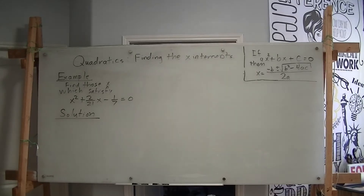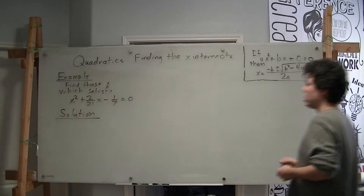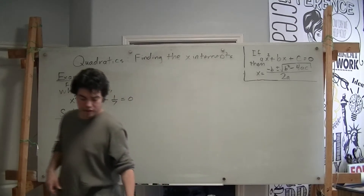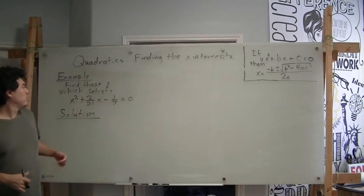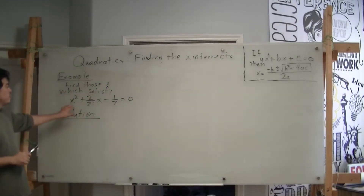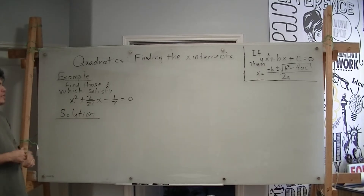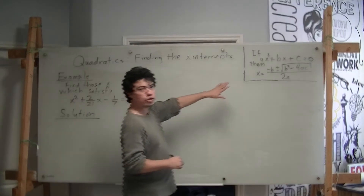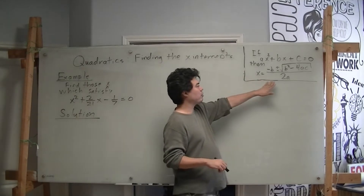So here we are, we're going to do another example of finding the x-intercepts, finding the roots of this quadratic, finding those x which makes this equation true. And again we're going to use the quadratic formula, which is our best friend for this purpose.